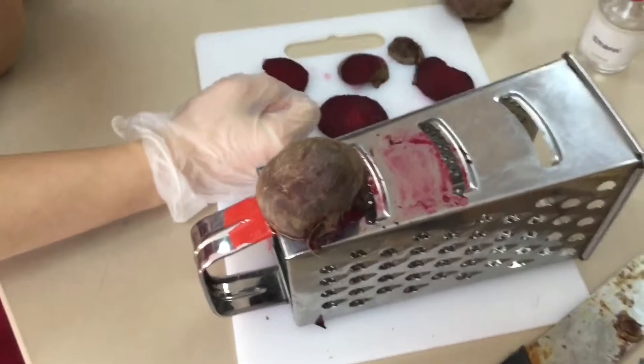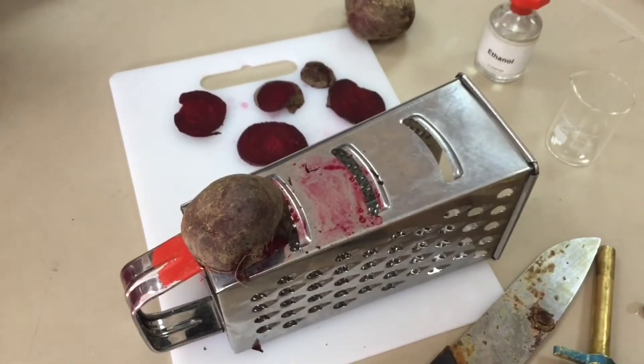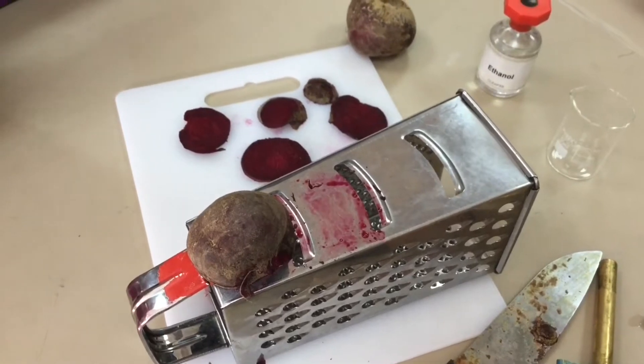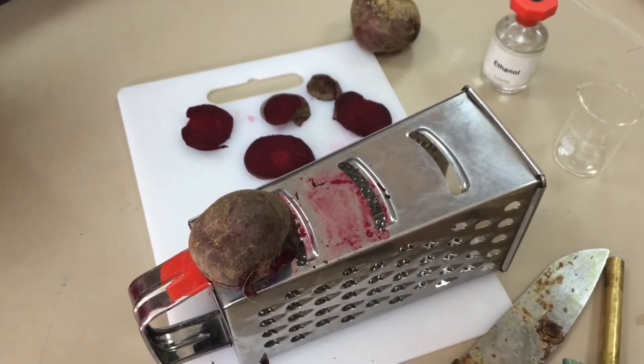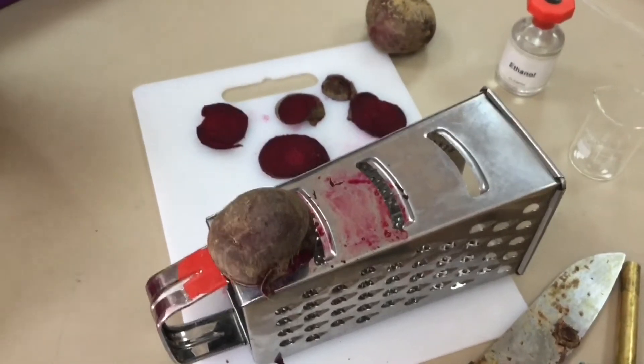Today's required practical is practical 4, titled Investigation into the effect of a named variable on the permeability of cell surface membranes. The cell surface membranes that we're going to use are that of beetroot.